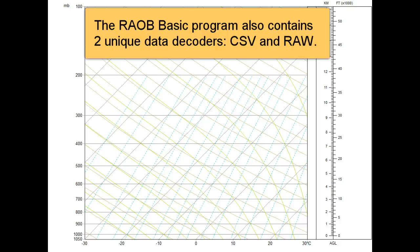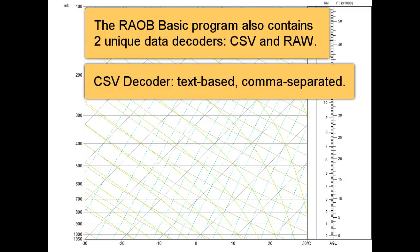The RAOB basic program also contains two other data decoders that are unique to the RAOB program. The first is the RAOB CSV format decoder.